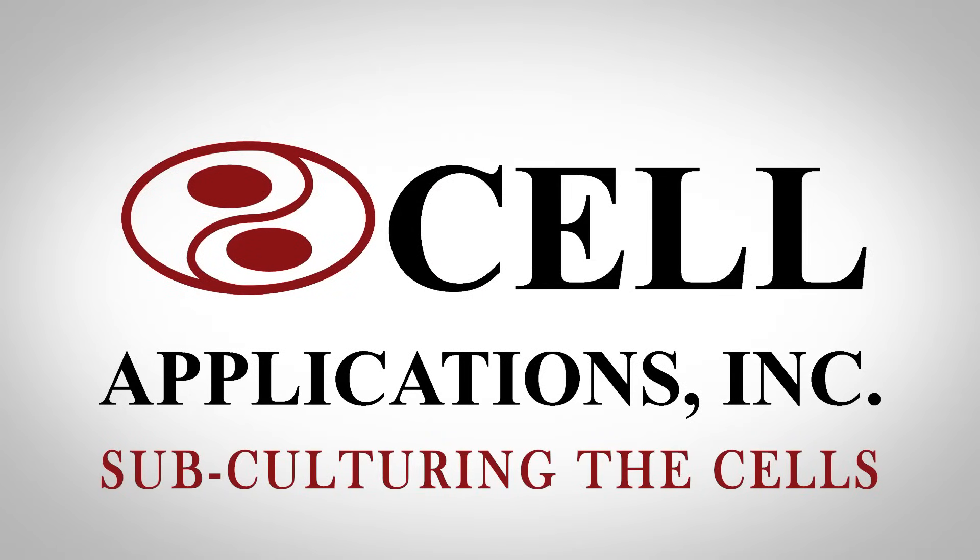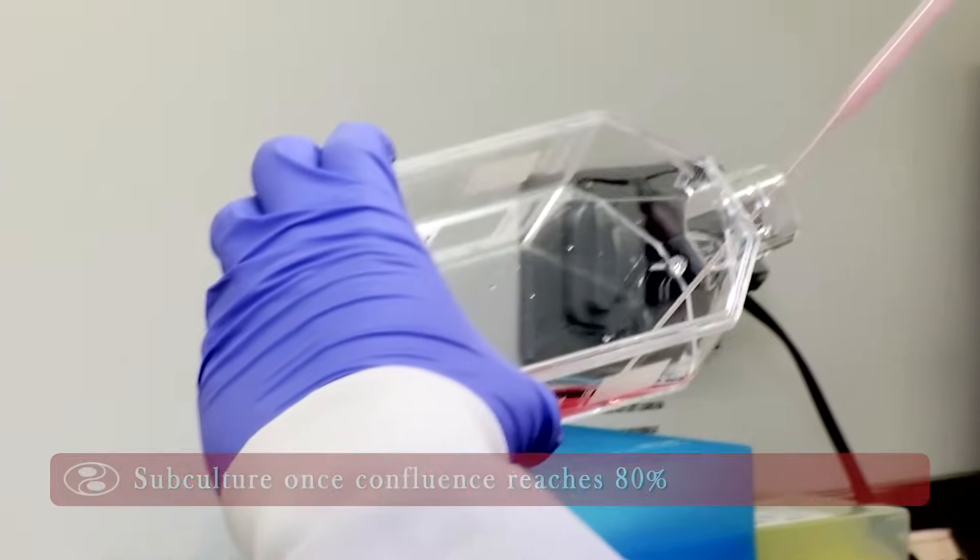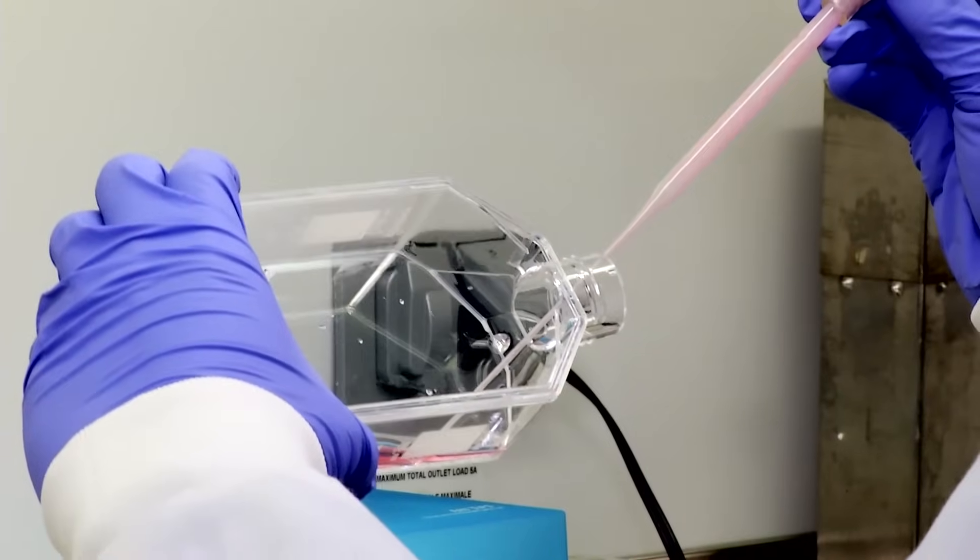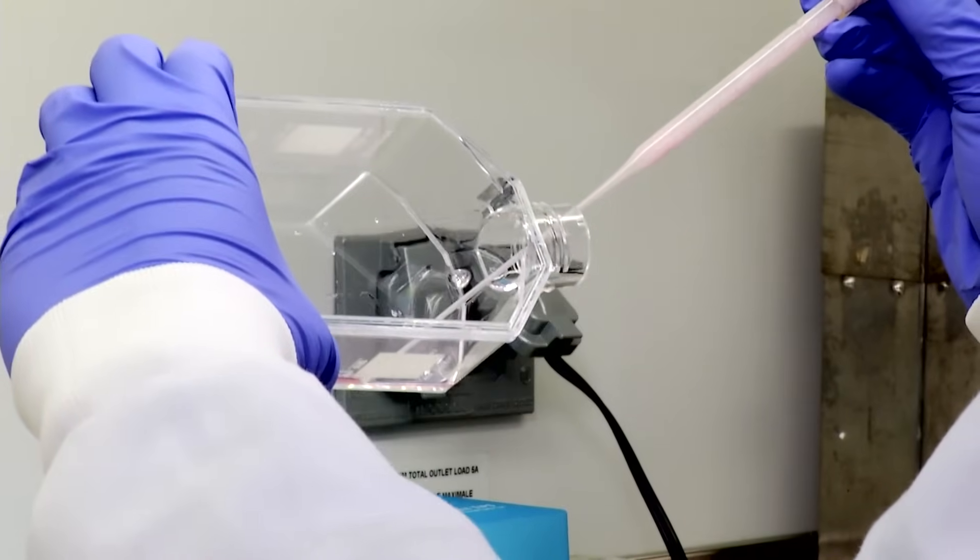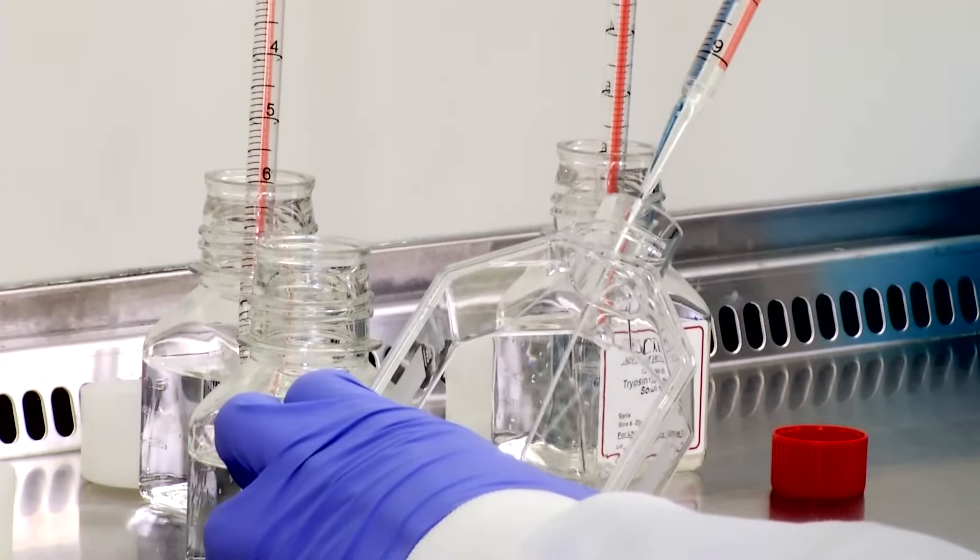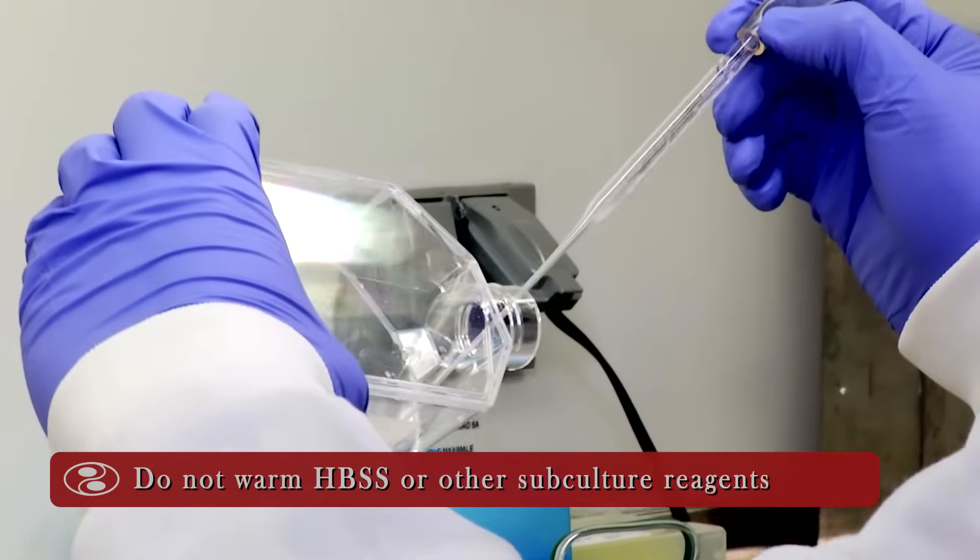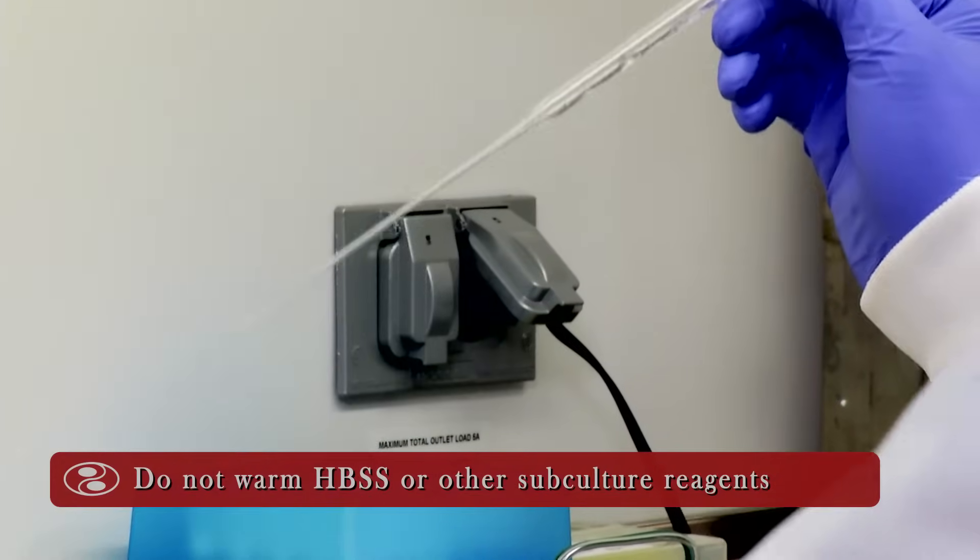Subculturing the cells. Subculture once confluence reaches 80%. Aspirate medium from flask. Wash attached cells with HBSS and remove HBSS. Do not warm HBSS or other subculture reagents.